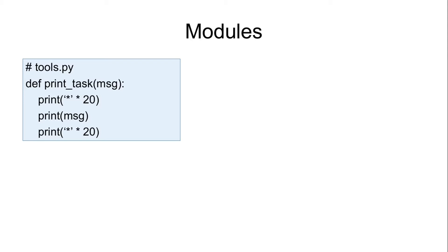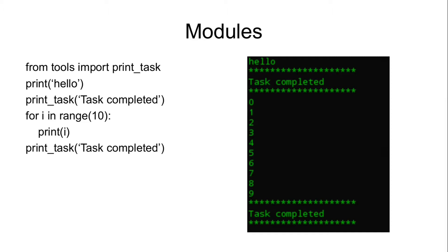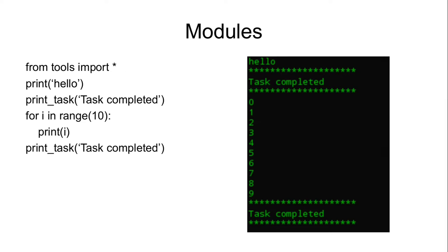For example, the function we used last lecture, print message, we saved it in a file called tools.py. To use this file we can import the file and then use tools.print_task to execute the function. Another option is to use 'from tools import print_task', which allows us to call the function directly by name. We can also use 'from tools import *', which gives us access to all functions in the module.